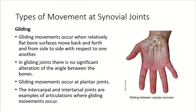Now let's talk about the types of movements accomplished by synovial joints. Gliding occurs when relatively flat bones slide or move back and forth or side to side with respect to one another. In a gliding joint, there is no significant alteration in the angle of the bones — it's more sliding and gliding, as the name implies. This occurs in plane joints; the intercarpals and intertarsal joints are examples.